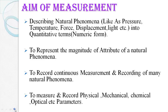We measure or describe that physical pattern, which represents the magnitude of the attribute of a physical parameter. The second aim is to record continuous measurements — recording many parameters with respect to time, including physical, mechanical, chemical, and optical properties of physical parameters — which gives the different conditions of those parameters.